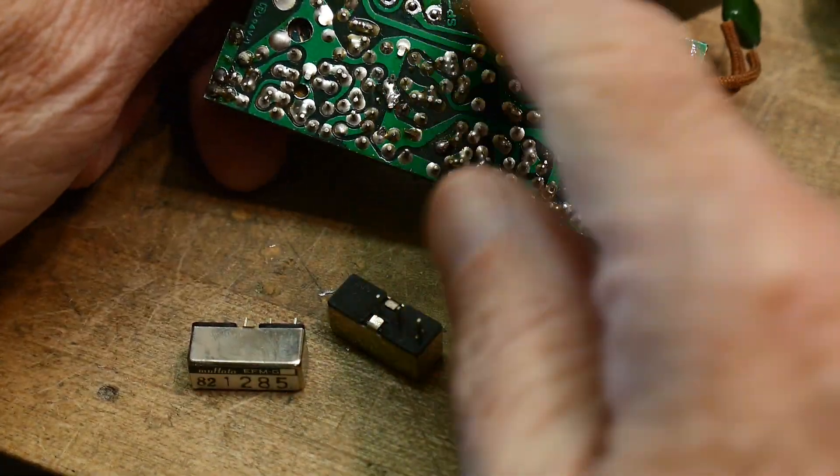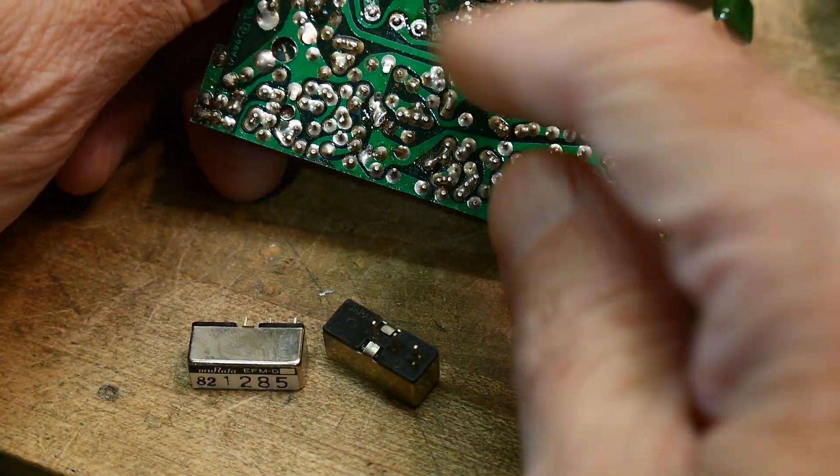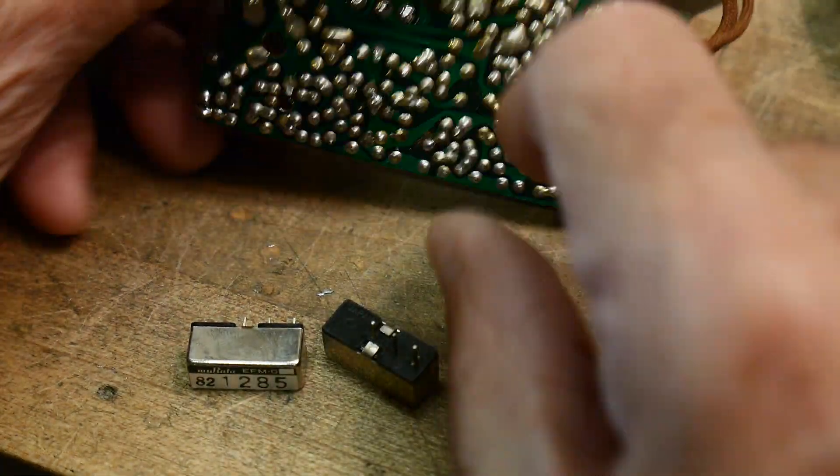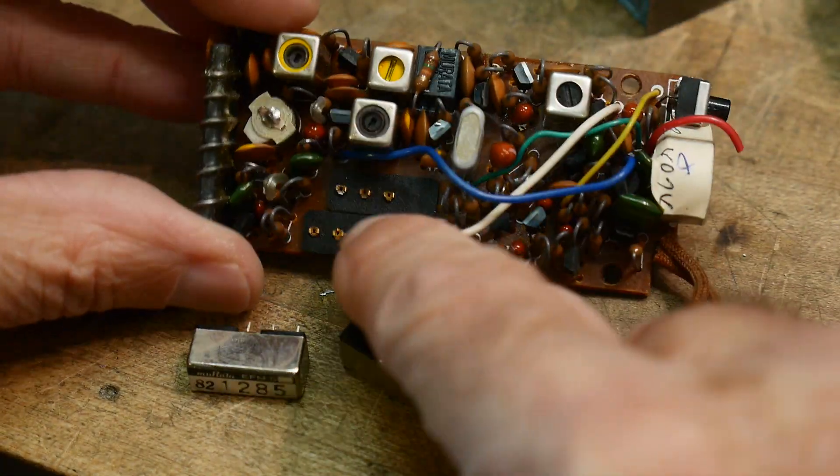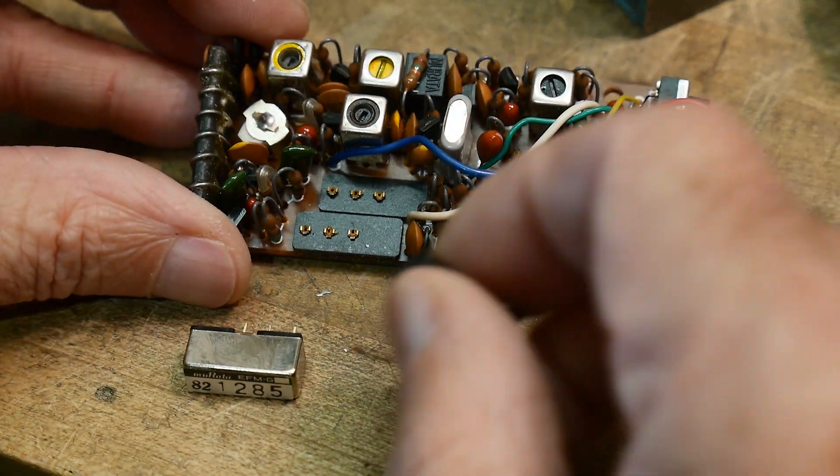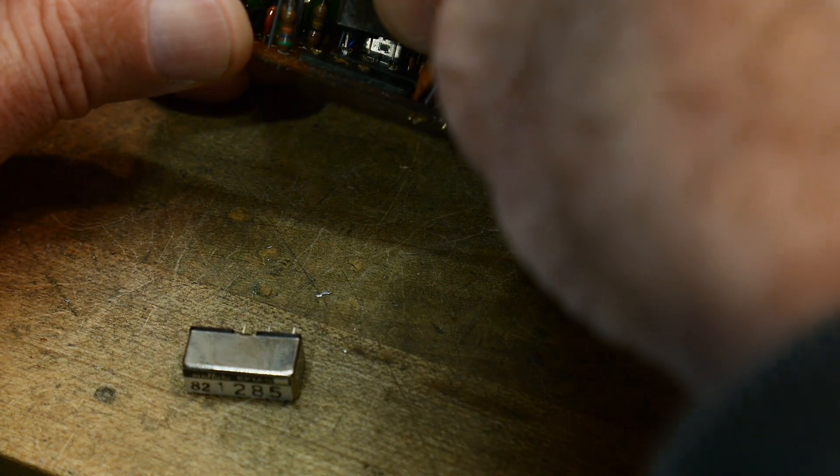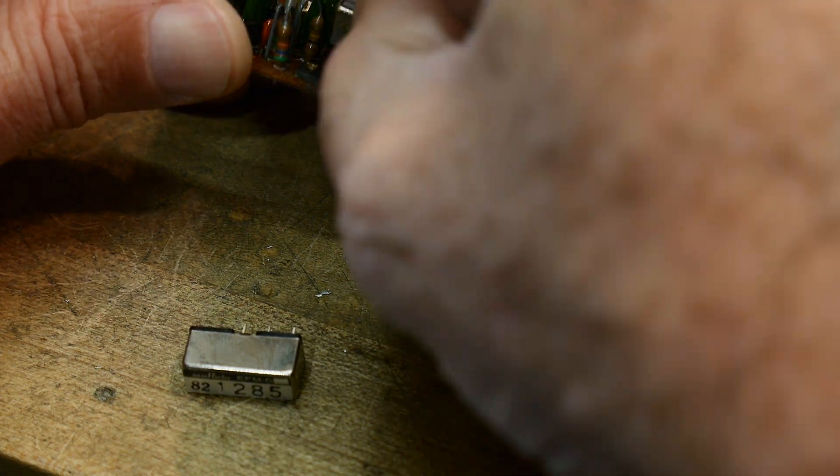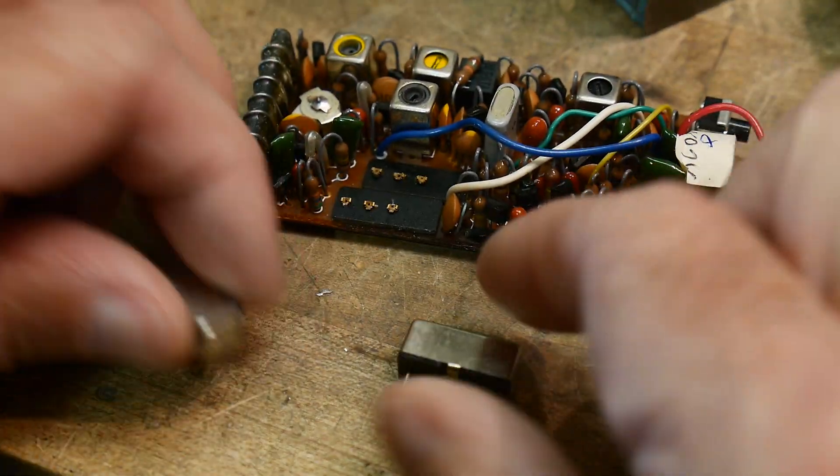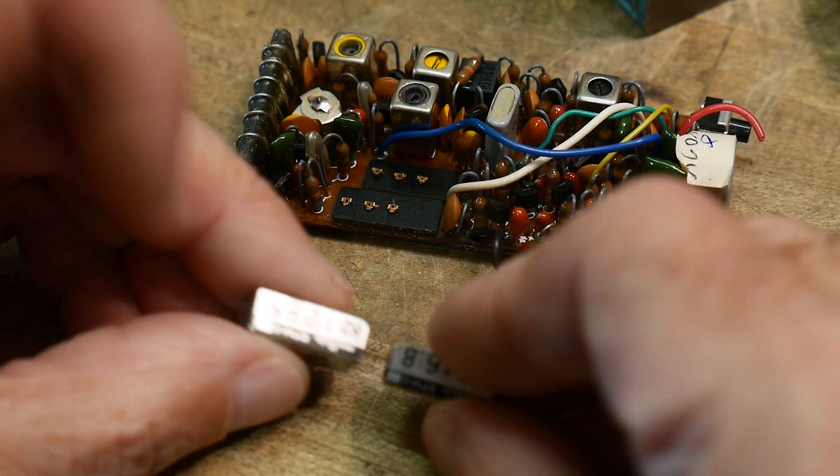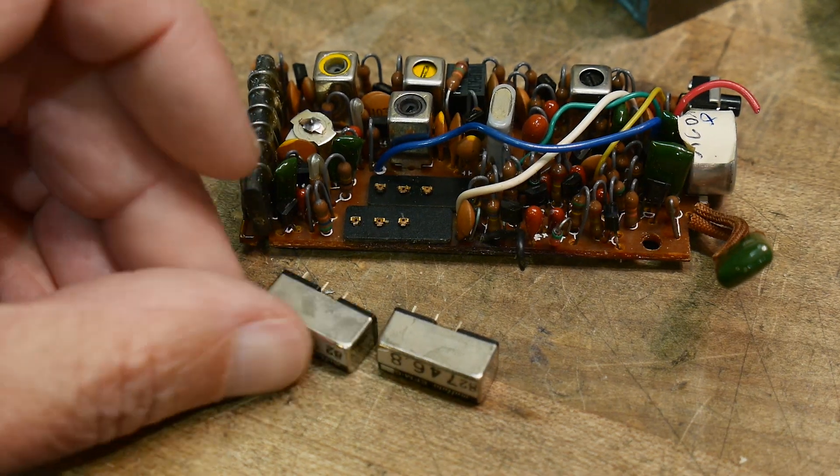All right. I was desoldering these filters and I went to lever them out and they just popped right off and turns out they're sockets. That's pretty cool. So I guess everybody had their own frequency or something. I don't know. They have little sockets. So yeah, really cool. Oh well, let's see if we can measure them.